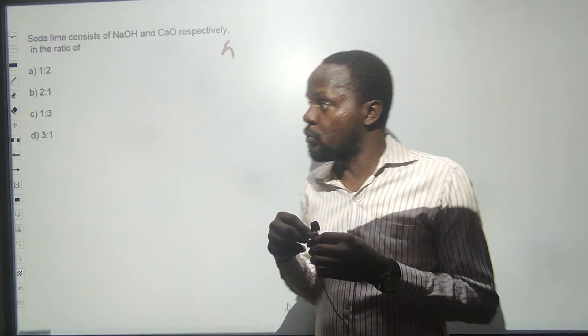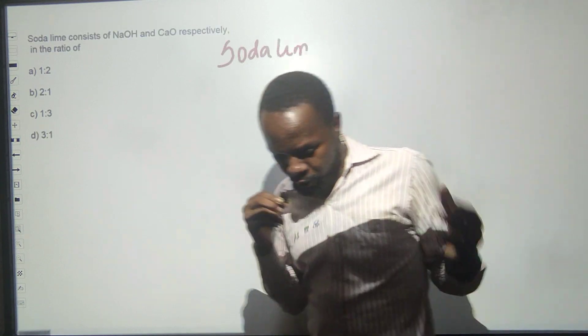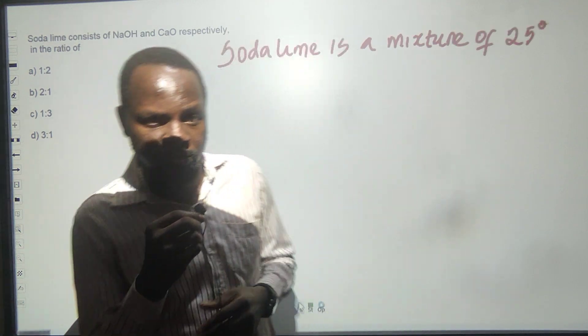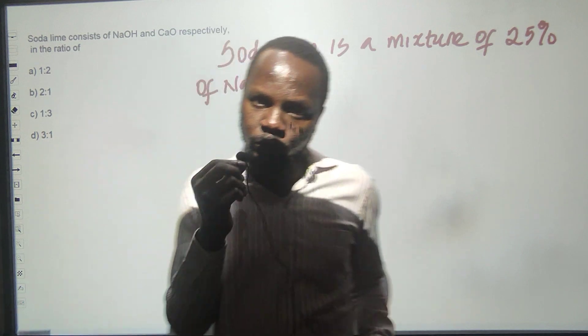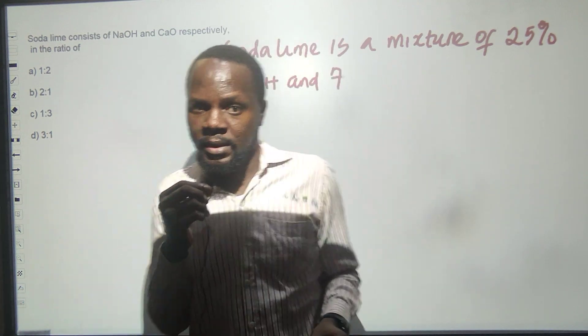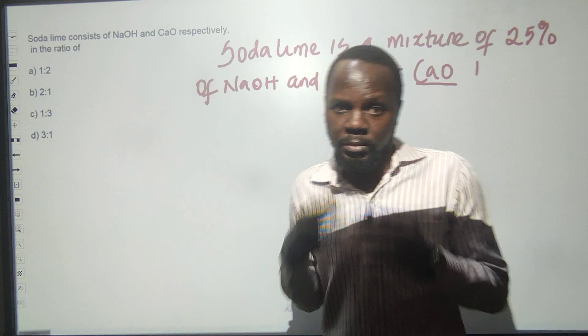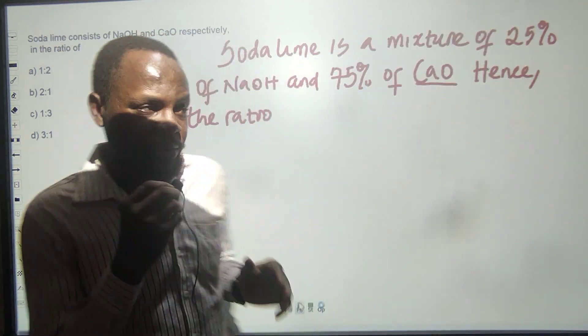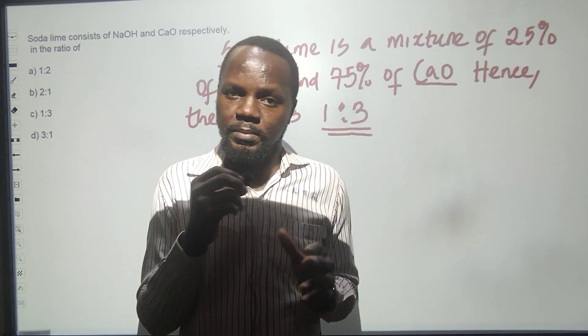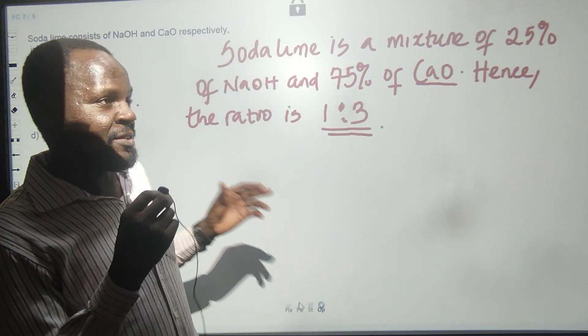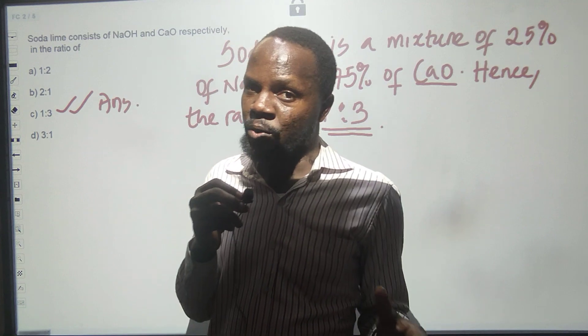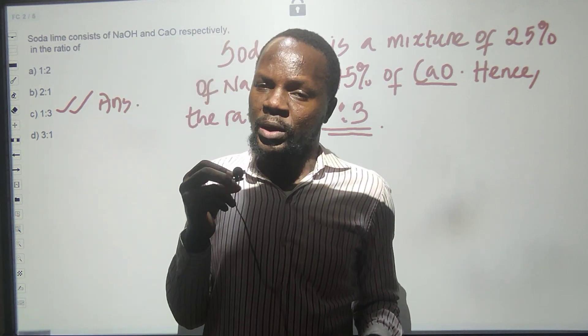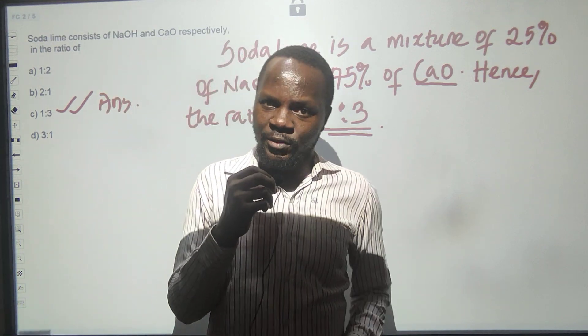Soda lime is a composition of calcium oxide and sodium hydroxide in the ratio of 1 is to 3. That means 25% sodium hydroxide and 75% quicklime. In fact, when you write the reaction between CaO plus NaOH and balance the equation, you'll see they are in the ratio of 1 is to 3.